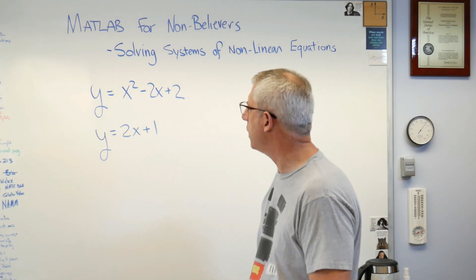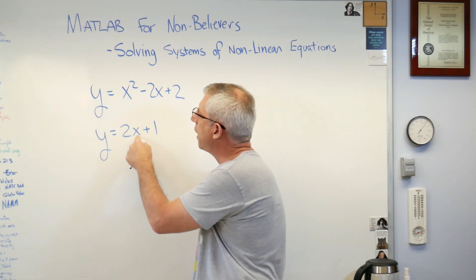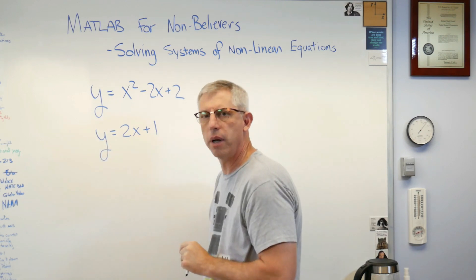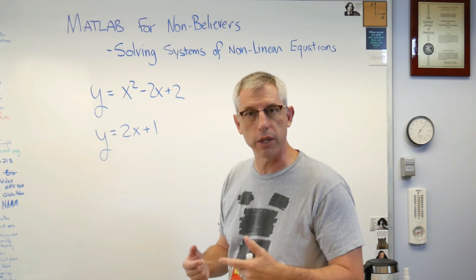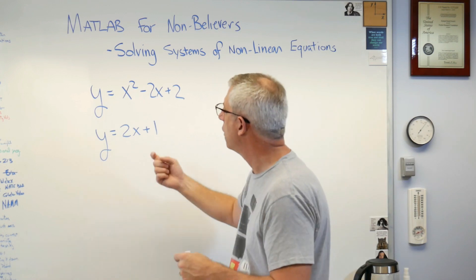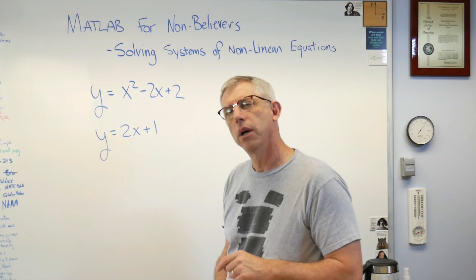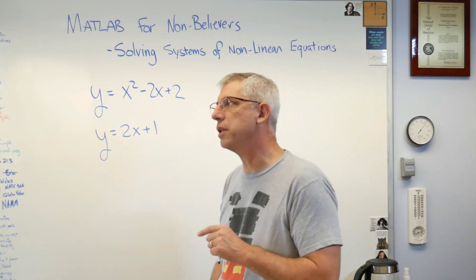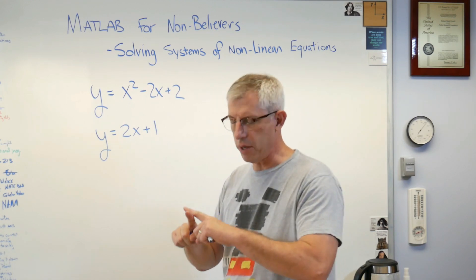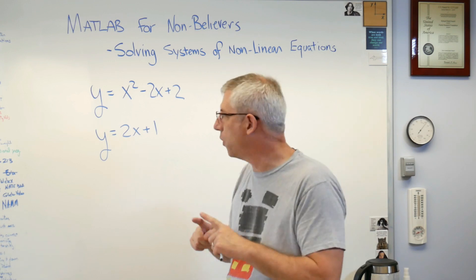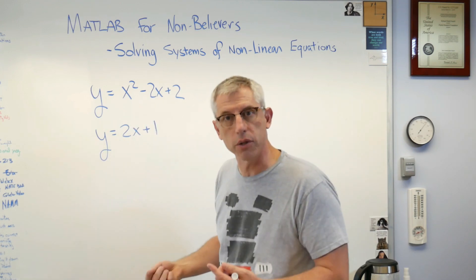What do we mean by solving this system? You're trying to find a value of x and a corresponding value of y that makes both equations true. If it's a single x and y that satisfies both, then if you plot them, the point where both are true is the point where the two curves cross over each other.